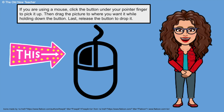It's going to either be an arrow or a pointy finger. If you're using a mouse, click the button under your pointer finger to pick it up. Then drag the picture where you want it while holding down the button. Last, release the button to drop it.